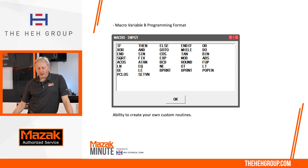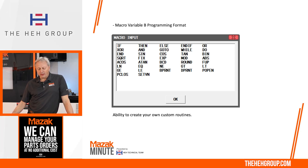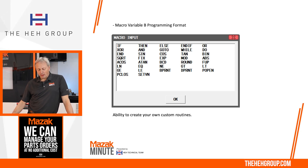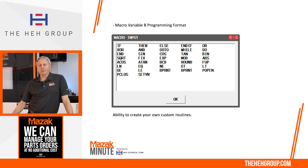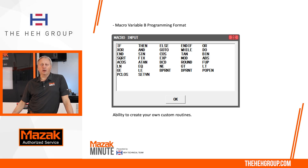We use macro variable B programming format. You can do if-then, while-do, and trig functions to really customize a program. If you have a custom routine, you can transfer a variable — what we call an argument — to the sub-program, making it a shorter program overall.